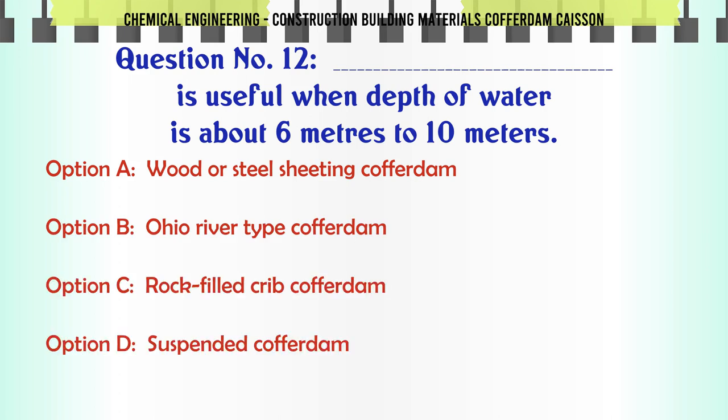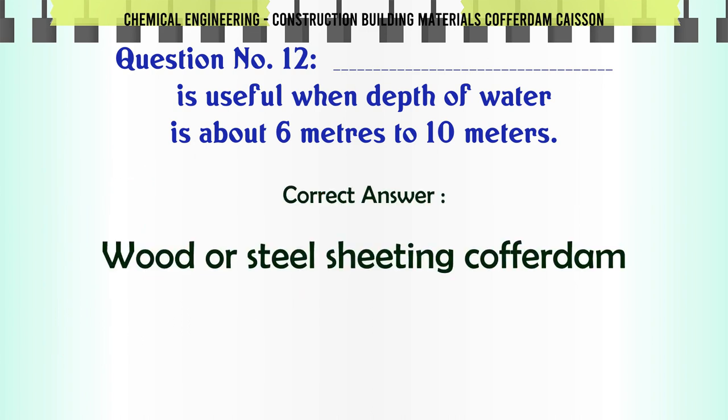Which type of cofferdam is useful when the depth of water is about 6 meters to 10 meters? A. Wood or steel sheeting cofferdam. B. Ohio river type cofferdam. C. Rock filled crib cofferdam. D. Suspended cofferdam. The correct answer is: Wood or steel sheeting cofferdam.